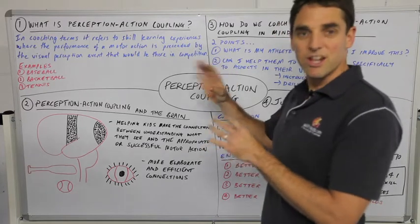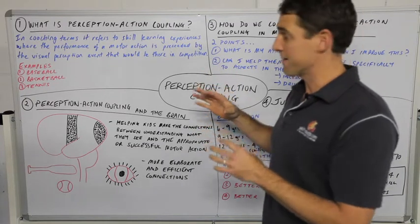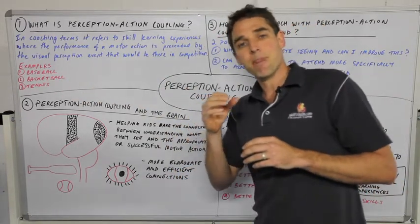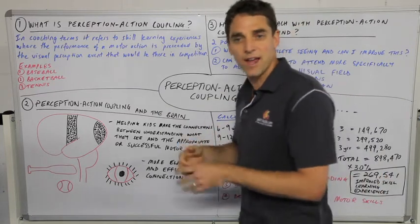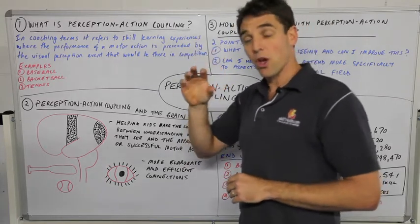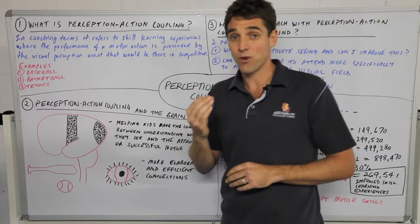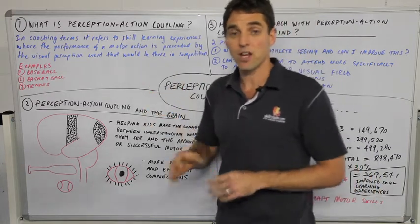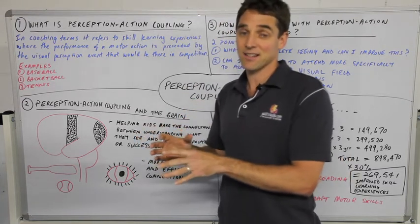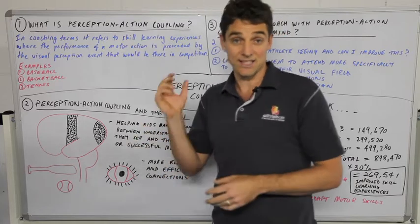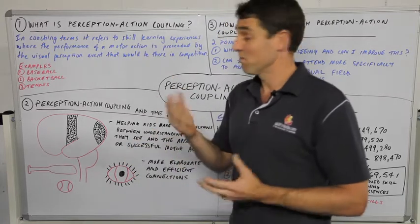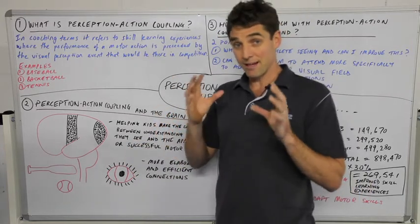Let's look at some examples. Starting with baseball — a kid learning to improve their baseball stroke technique hitting against a ball machine compared to against an actual thrower. Against a ball machine, what that kid is actually seeing is not going to be what they would see in competition, which is someone actually pitching. What's better is that they actually see someone pitching at them, because that replicates the perceptual environment.